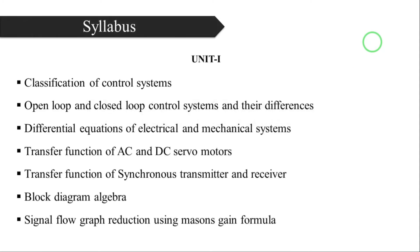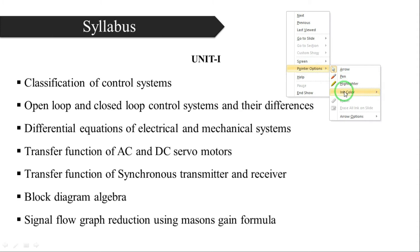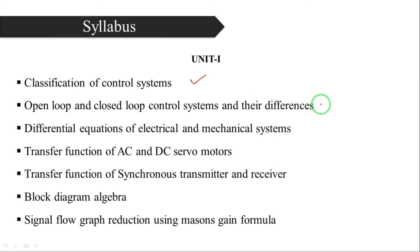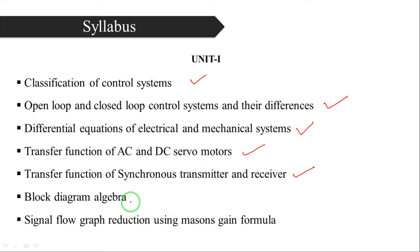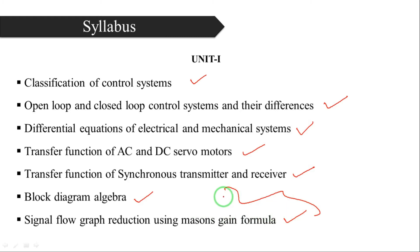We will start from the mathematical modeling of a control system — that is unit number one. The topics covered in this unit are: classification of control systems, open loop and closed loop control systems, the difference between them, differential equations and transfer functions of electrical and mechanical systems, transfer functions of AC and DC servo motors, transfer function of synchro transmitter and receiver, block diagram reduction techniques, and signal flow graph reduction technique. These two are techniques to derive the transfer function of a system.